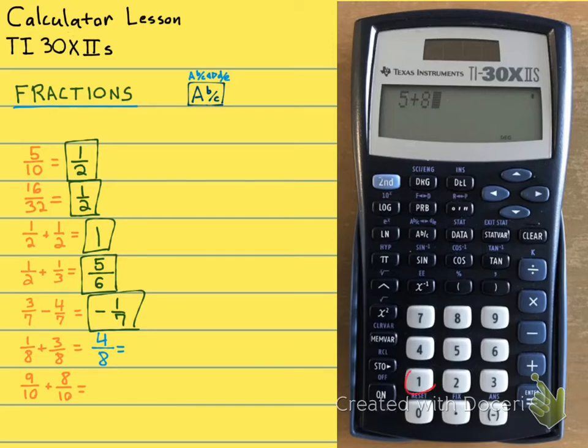We're going to type in 1, ABC, 8, plus 3, ABC, 8, and then hit equals. And now the calculator is not going to stop at 4 eighths. It's going to go straight to your answer, which is 1 half. So the calculator always gives you back a simplified fraction.